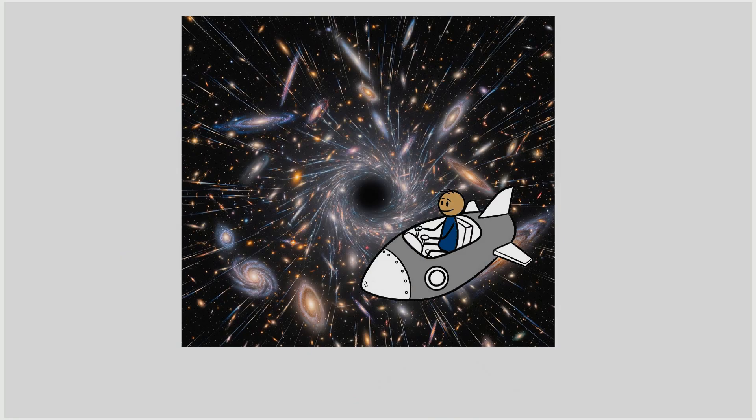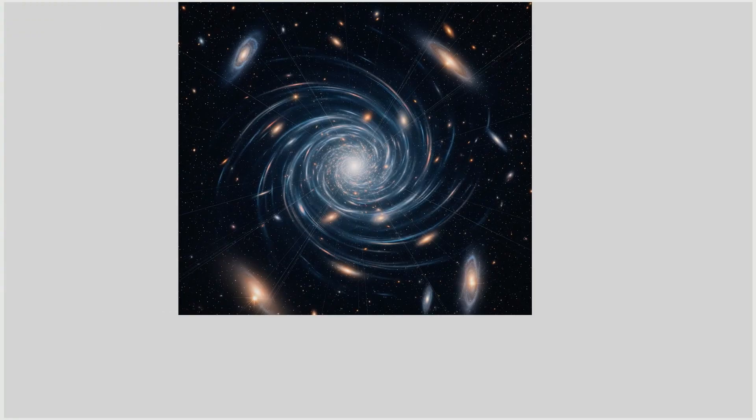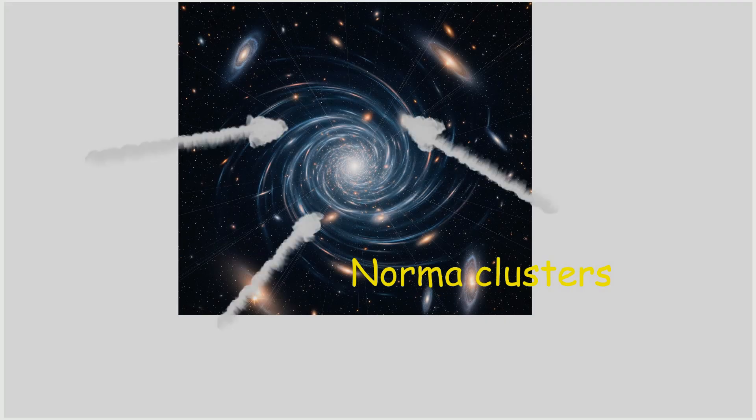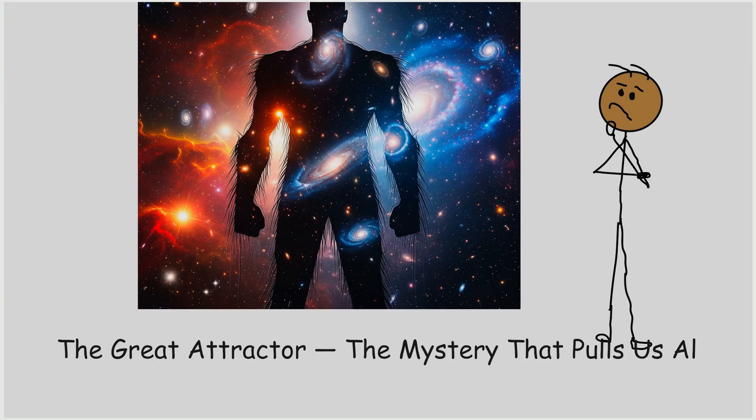What makes the Great Attractor so unsettling is its invisibility and its power. The gravitational pull is strong enough to distort the path of galaxy clusters across hundreds of millions of light-years. Though some of its mass has been attributed to the Norma cluster and nearby superclusters, the exact nature of the mass concentration remains partially unexplained.